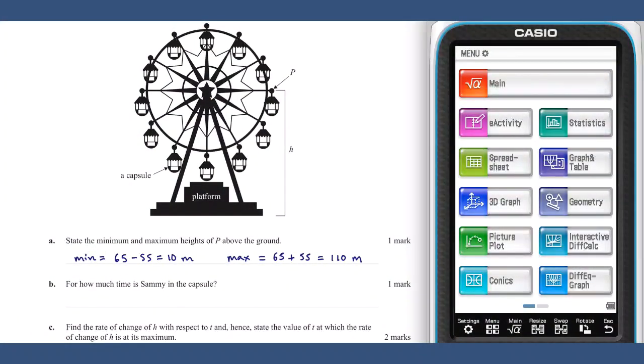Part B. The time that Sammy is in the capsule is equal to the period of the function. The period of the function can be found by computing 2 pi divided by the coefficient of t, which is pi on 15. This can be simplified to give a period of 30 minutes.